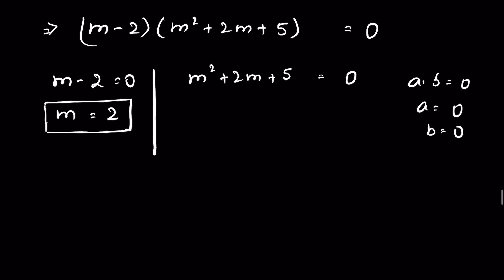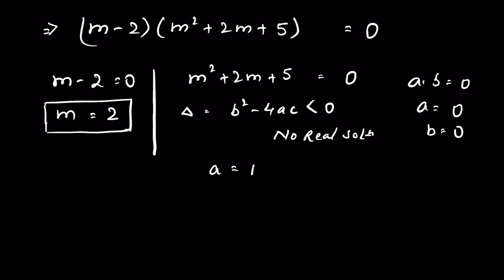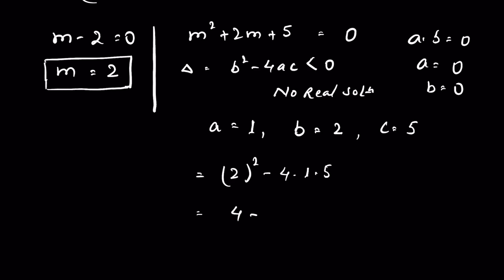We can check whether m has a real solution using the discriminant formula. If b² minus 4ac is less than 0, then there is no real solution. Here a is the coefficient of m², which is 1; b is the coefficient of m, which is 2; and c is 5. So b² minus 4ac equals 4 minus 20, which is less than 0. That means no real solution exists for this quadratic.